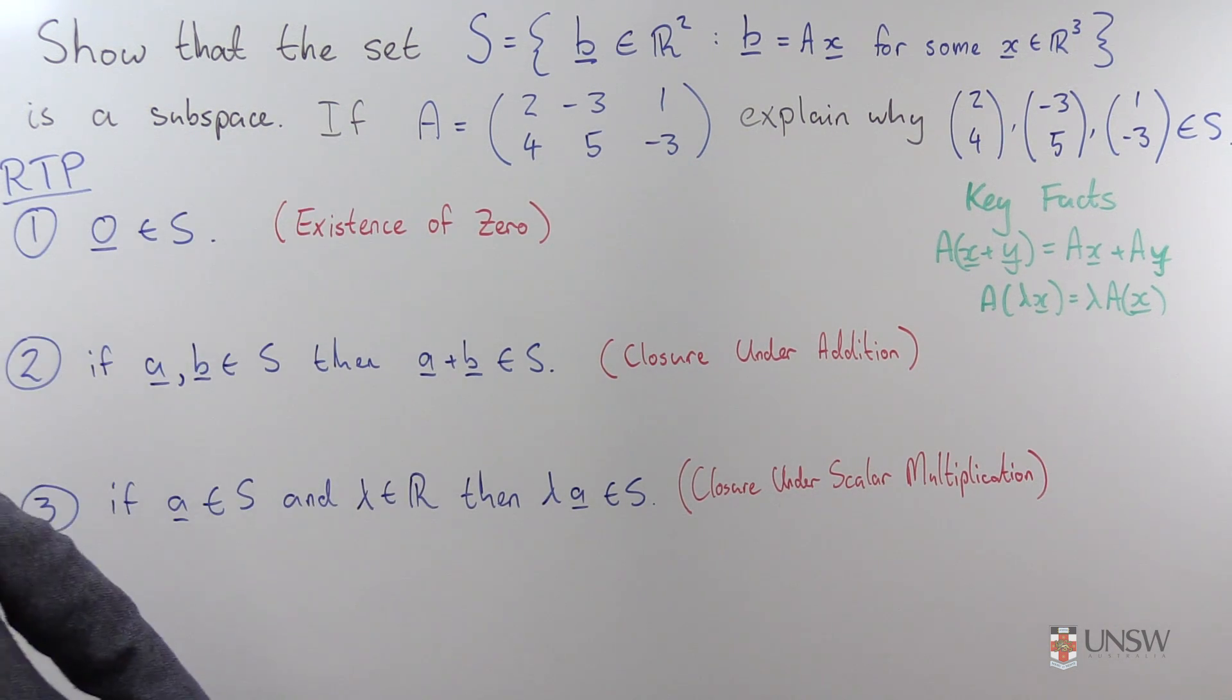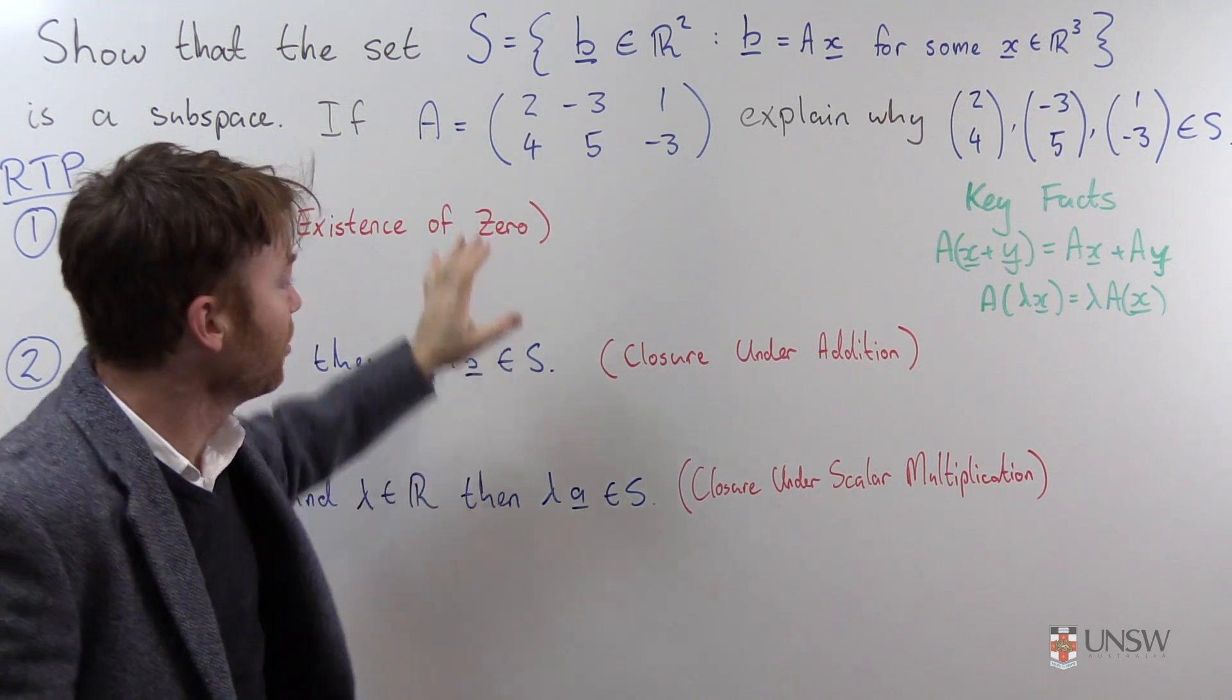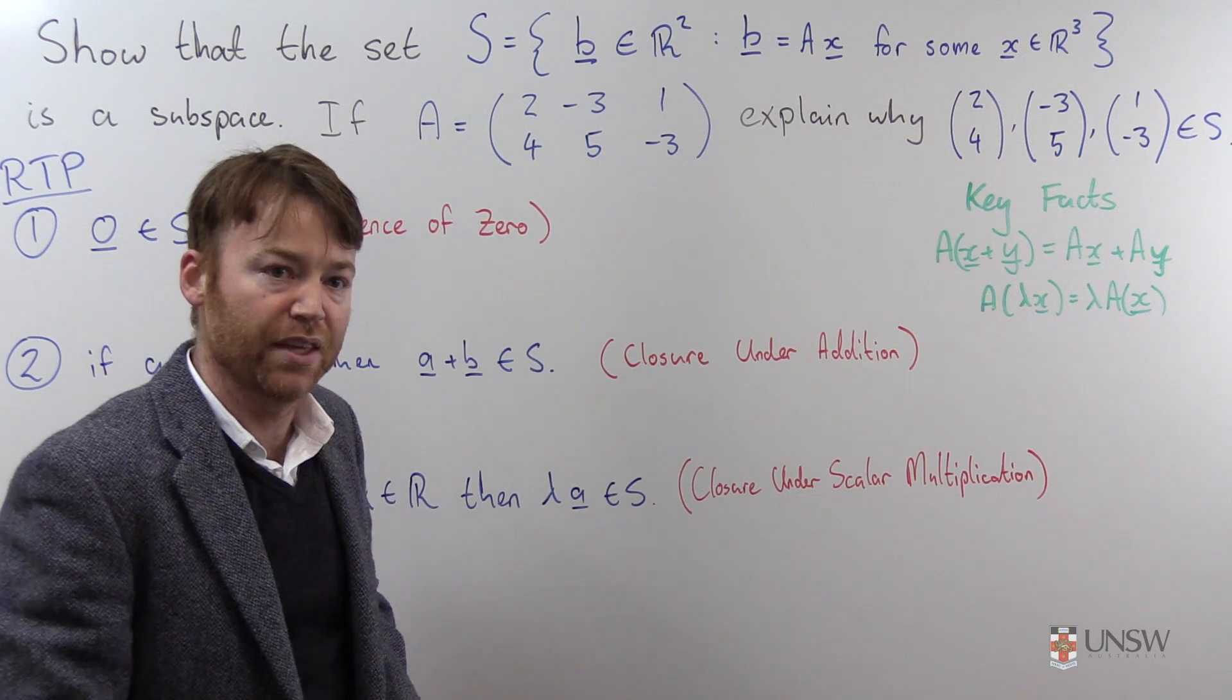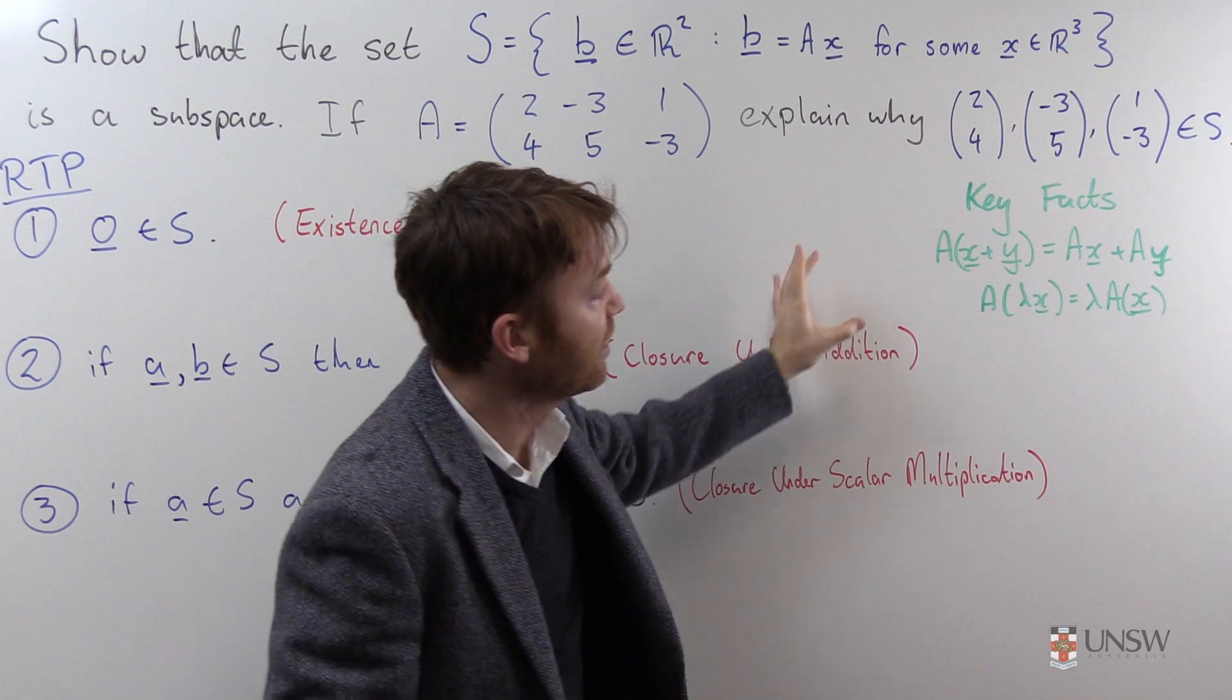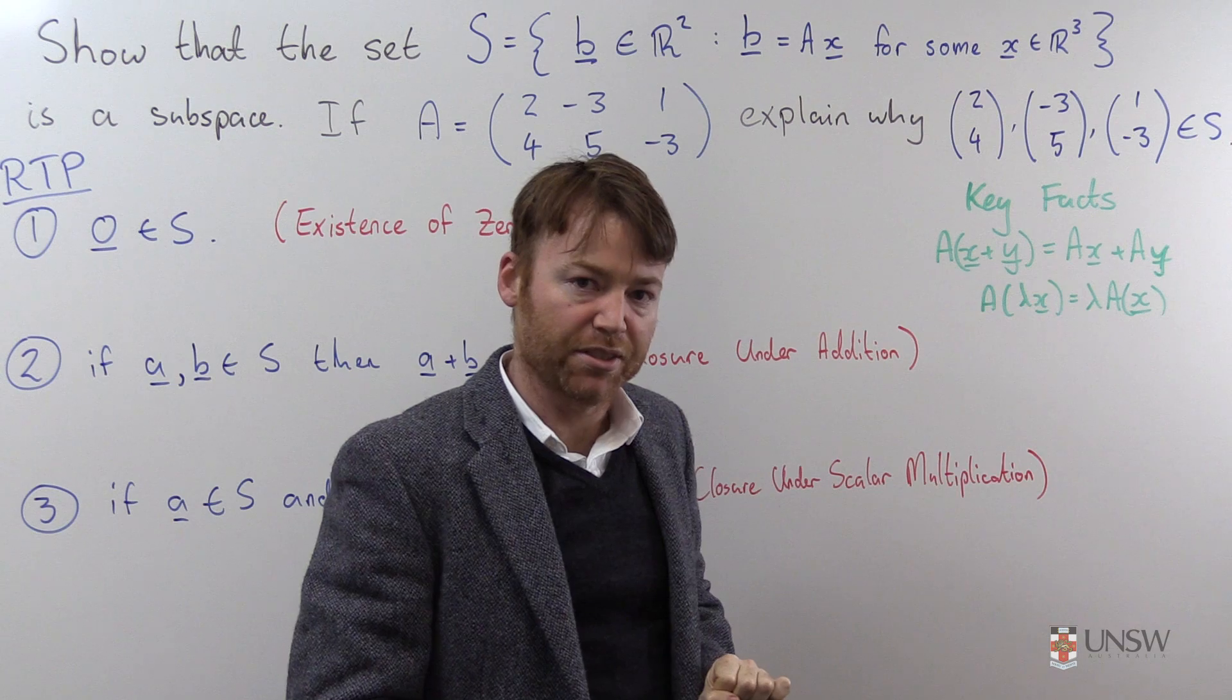Notice that I've defined the matrix A down in the second part of the question. What the matrix A actually looks like is not going to be relevant for the first part of the question. The only thing that is relevant for the first part are these key facts about how a matrix acts on elements.